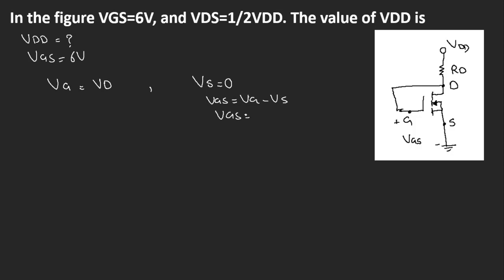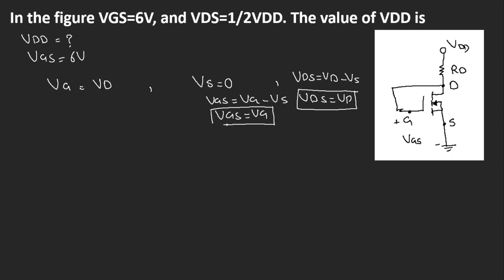Also, Vds is equal to Vd minus Vs, and because Vs is 0, Vds will be equal to Vd. This means Vds equals Vd and Vgs equals Vg. So I can write that Vgs is equal to Vds, because the source is grounded. Now, it is given that Vgs is equal to 6 volts, so Vds is also equal to 6 volts.